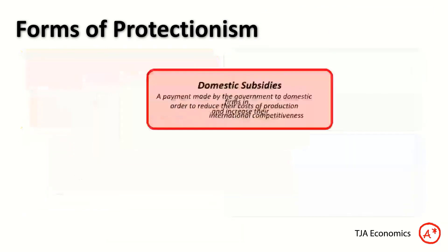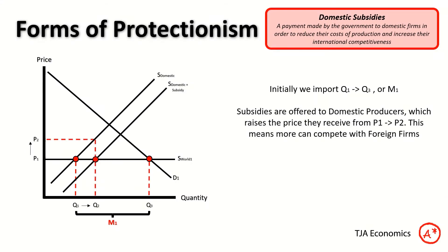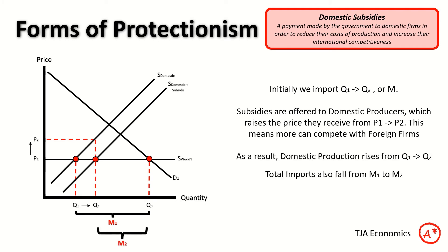Now let's look at domestic subsidies — a much simpler diagram. Again, we start with imports at M1 and shift the supply curve outwards; that is our domestic subsidy. The vertical distance is the value of the subsidy. Because we offer a subsidy to domestic firms, more of them can now compete with foreign firms. Domestic production increases from Q1 to Q2, and we import M2 instead of M1. Crucially, overall consumption does not fall — it's just that a greater proportion is being made by domestic firms.